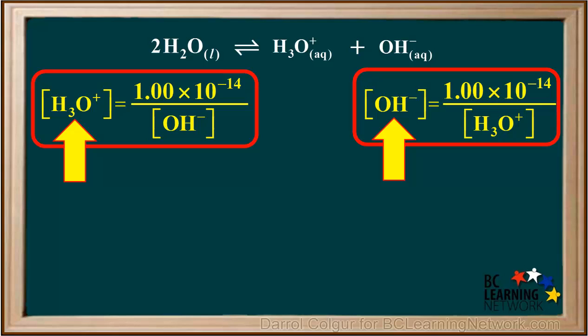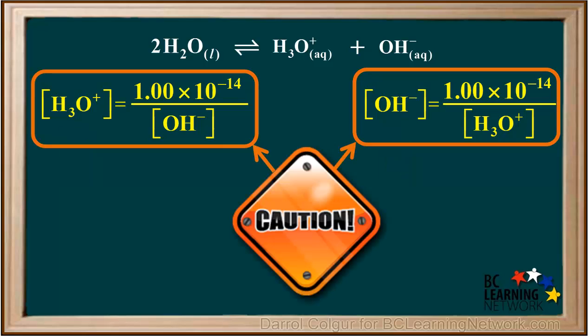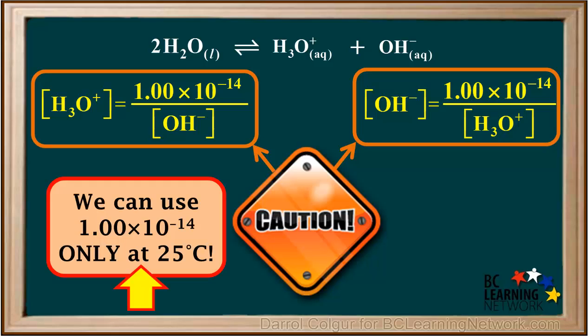From now on, we can use whichever one of these equations we need. But we must use caution with these. Remember, we can use 1×10⁻¹⁴ only if the temperature is 25 degrees. If we are not at 25 degrees, we could not use this value for Kw. We would have to be given the value of Kw for the temperature we are working at.